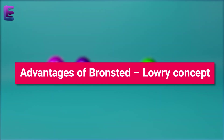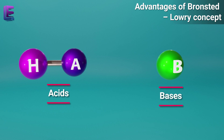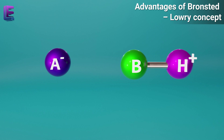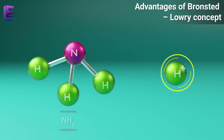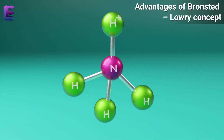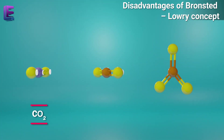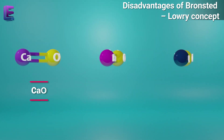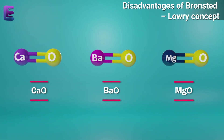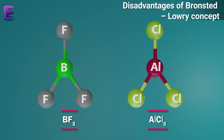Advantages of the Bronsted-Lowry concept: it is not limited to atoms — it includes ions as acids and bases. It can explain the basic nature of proton acceptance in basic salts like Na2CO3 and NH3. It can explain acid-base reactions even in a non-aqueous medium. Disadvantages: it cannot explain reactions between acidic oxides like CO2, SO2, and SO3 with basic oxides like CaO, BaO, and MgO in the absence of water. Substances like BF3 and AlCl3 do not contain hydrogen, so they cannot donate protons, but they behave like Lewis acids.